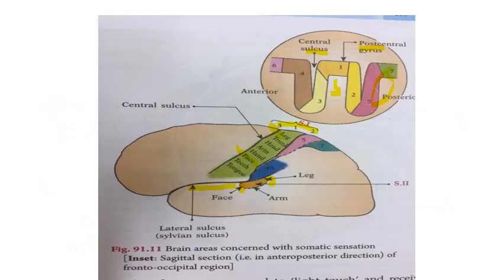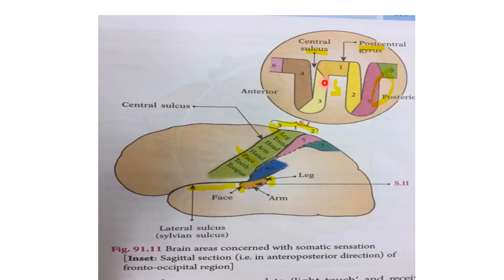These are the brain areas concerned with somatic sensation. Area 3, 1, and 2 make up the primary somatosensory cortex. Area 3 is divided into 3A and 3B: 3A is mainly for proprioception and 3B is for tactile information. Area 2 receives both proprioceptive and tactile information. Area 5 and 7 form the somesthetic association area.